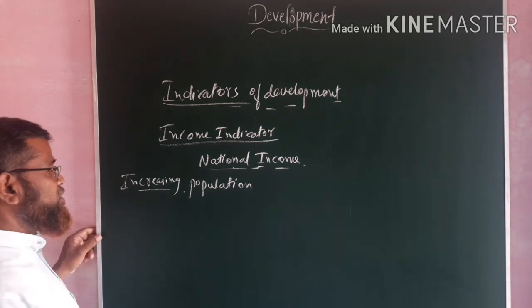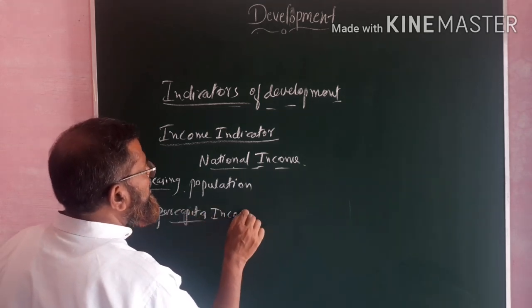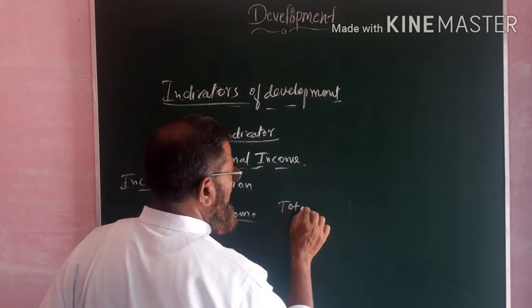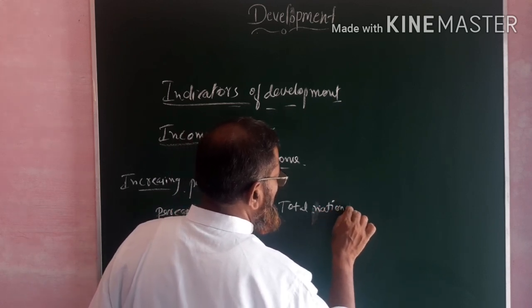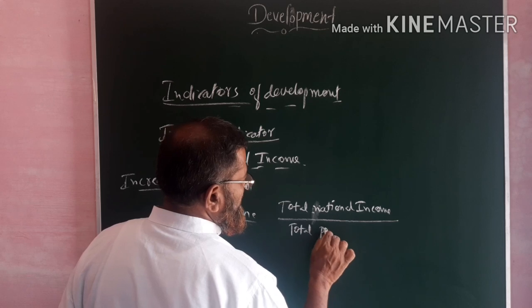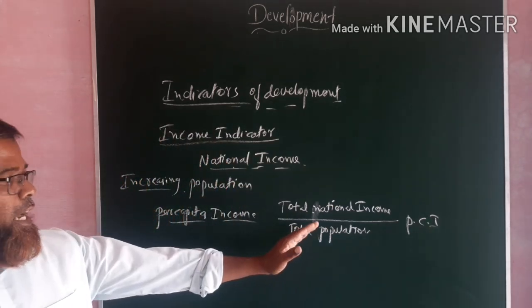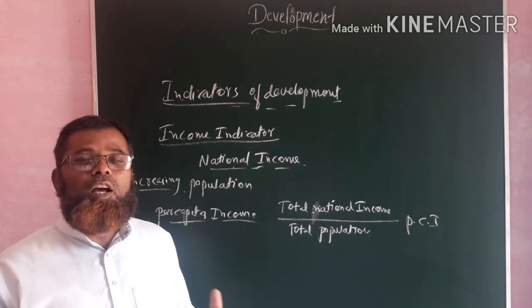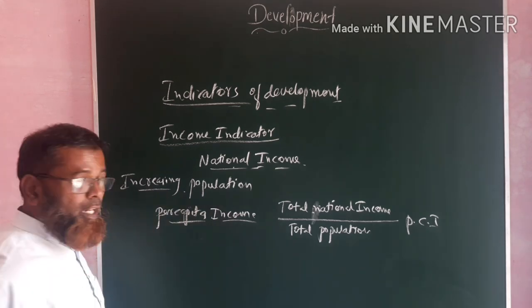That's why another criteria to be taken into consideration is per capita income. Per capita income is another indicator to measure the development. Per capita income means the national income divided by the total population of a country. That outcome will be the per capita income, and on that basis we try to know whether a country is at a developed or underdeveloped stage.